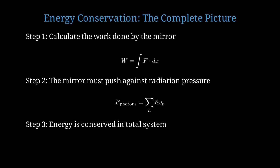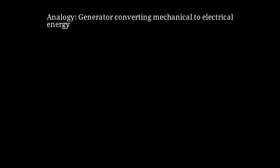Think of it like an electrical generator. The generator converts mechanical energy into electrical energy. The dynamical Casimir effect converts mechanical energy of the mirror into electromagnetic energy of photons. Both conserve total energy.